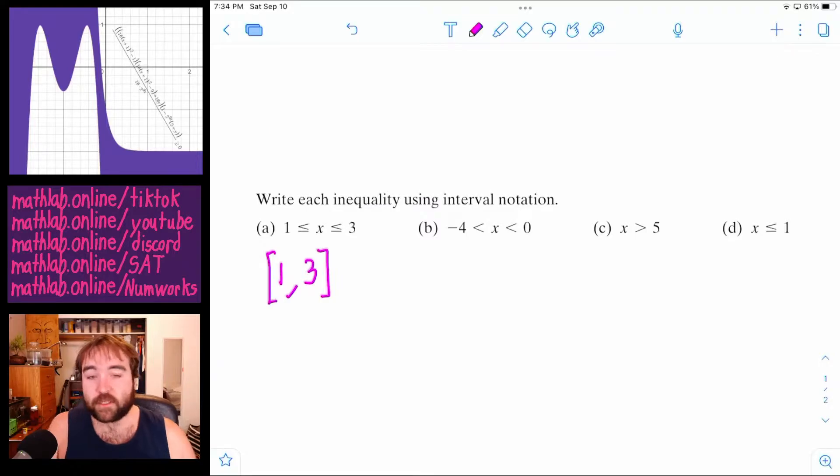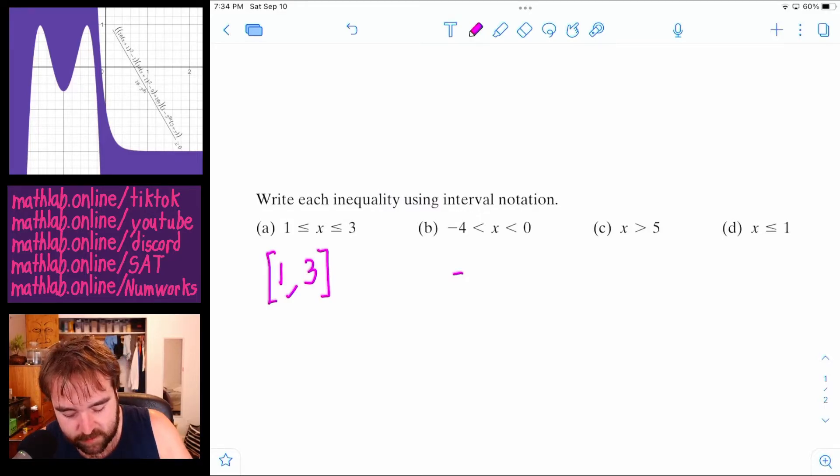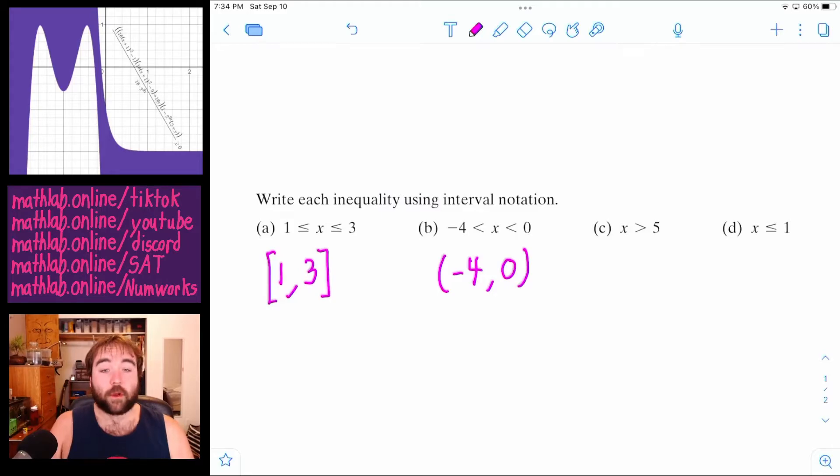Whereas on the next one, you see it's not allowed to be equal to negative four and zero. So we're going to start with the same thing. We're going to say the smallest thing x can go up to is negative four. The biggest thing is zero, but it cannot be those numbers. So we're going to put a parenthesis on those.